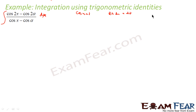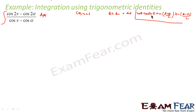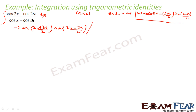The formula: cos A - cos B = -2·sin((A+B)/2)·sin((A-B)/2). Let us apply this formula to the numerator. cos 2x - cos 2α becomes -2·sin((2x+2α)/2)·sin((2x-2α)/2) = -2·sin(x+α)·sin(x-α). For the denominator, cos x - cos α becomes -2·sin((x+α)/2)·sin((x-α)/2). The -2 and -2 cancel.